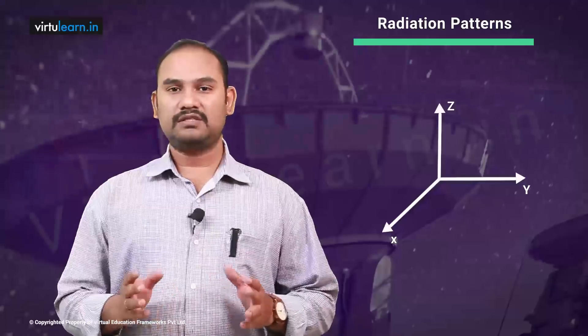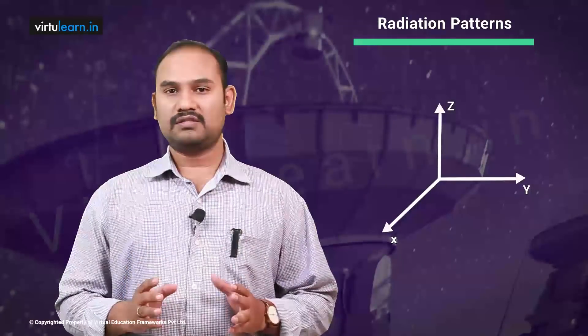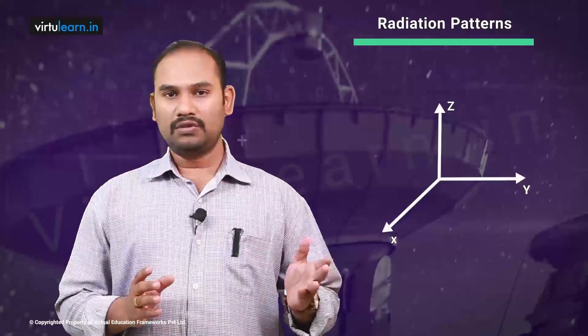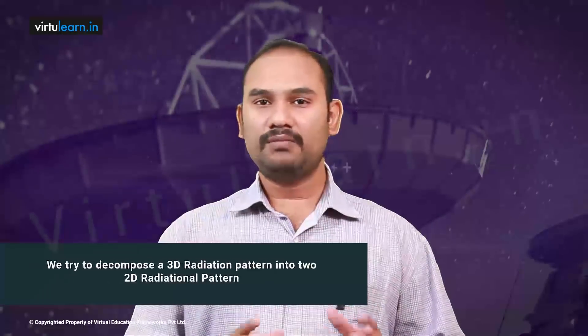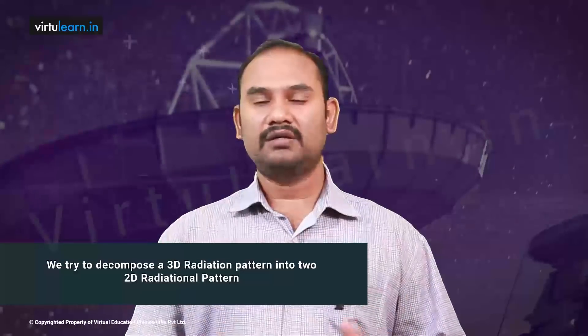The radiation pattern of an antenna, which is three-dimensional, can be decomposed into two two-dimensional planes. The actual pattern of an antenna consists of X, Y, and Z axes, which requires three axes for representation. But when you actually draw the radiation pattern on a board or on paper, which are two-dimensional planes, it is not possible. So for analytical and representation convenience, we decompose a 3D radiation pattern into two 2D radiation patterns, and each pattern is called a principal plane.